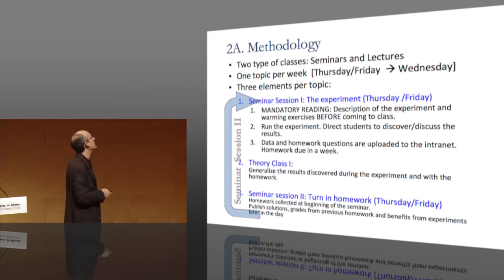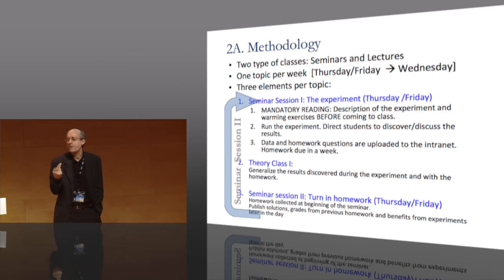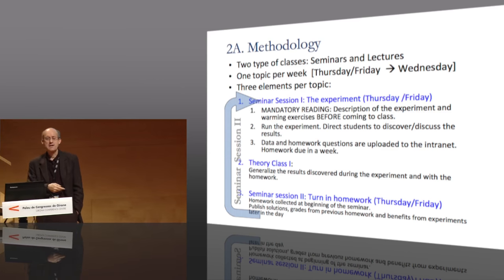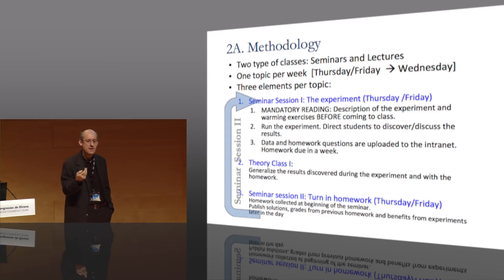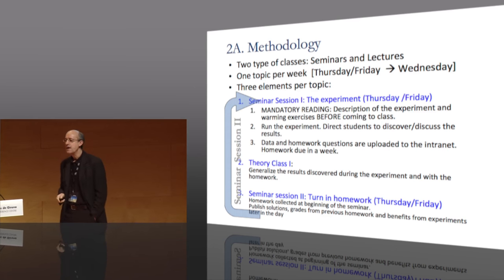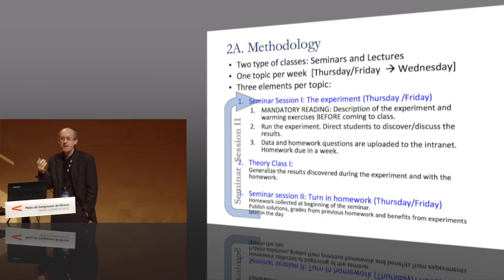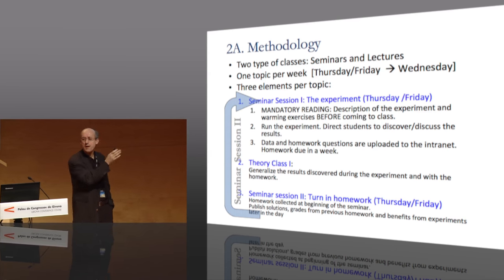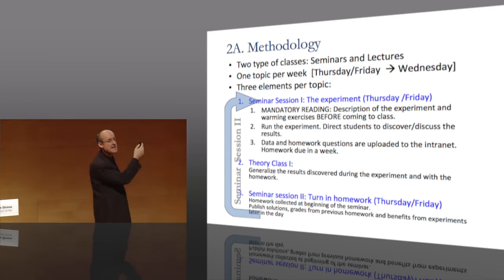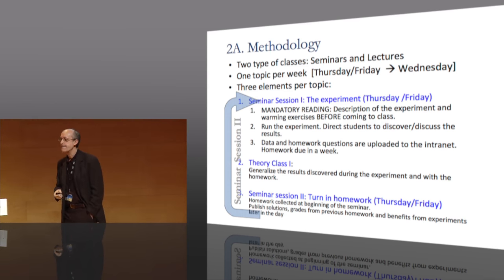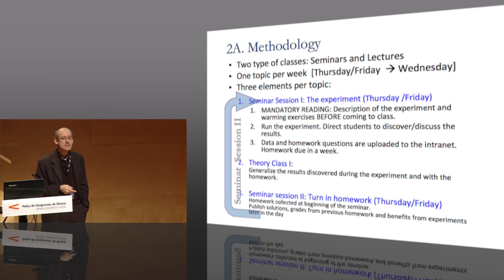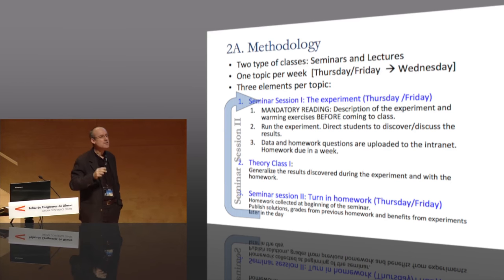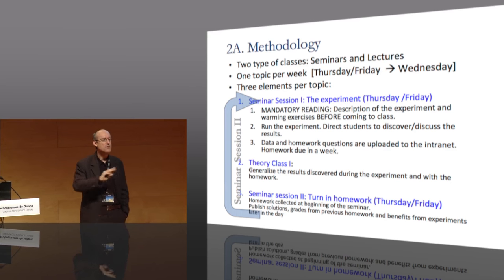What's the methodology? This is the part I'm especially interested in. There are two types of classes: seminars and lectures. Seminars are the experiments; lectures are the theory. The order is important. There is one topic per week, and the classes run from Thursday or Friday through to Wednesday. There are three elements in each topic. First is the experiment — students do it before knowing anything.